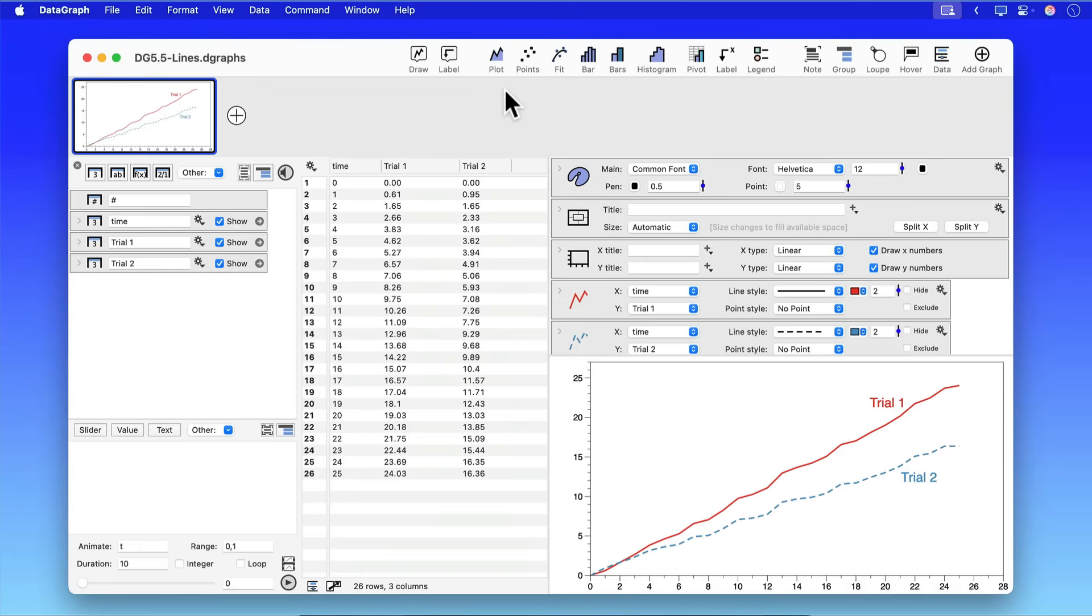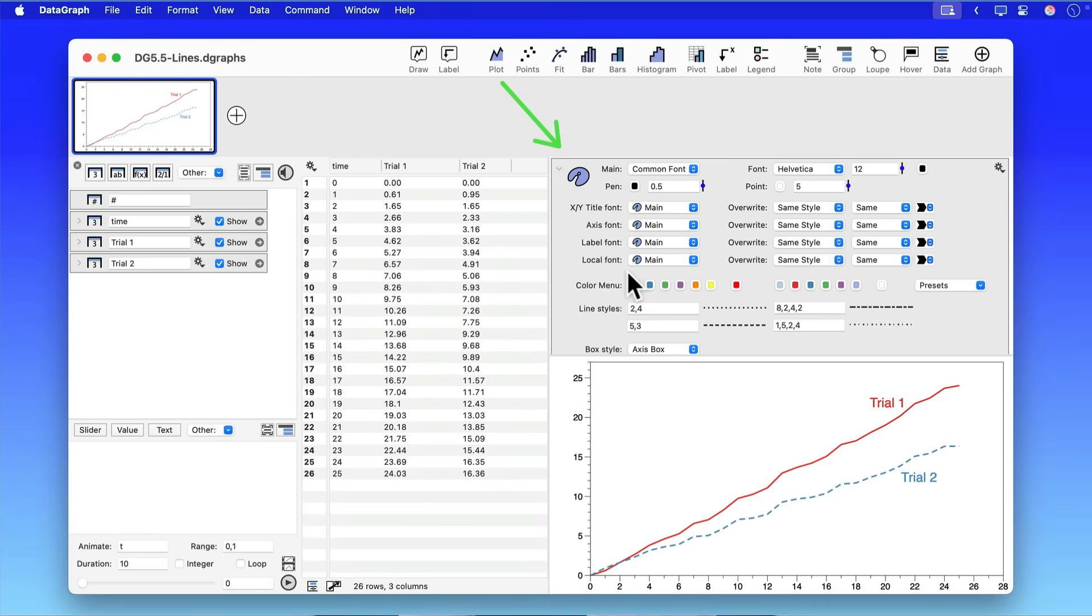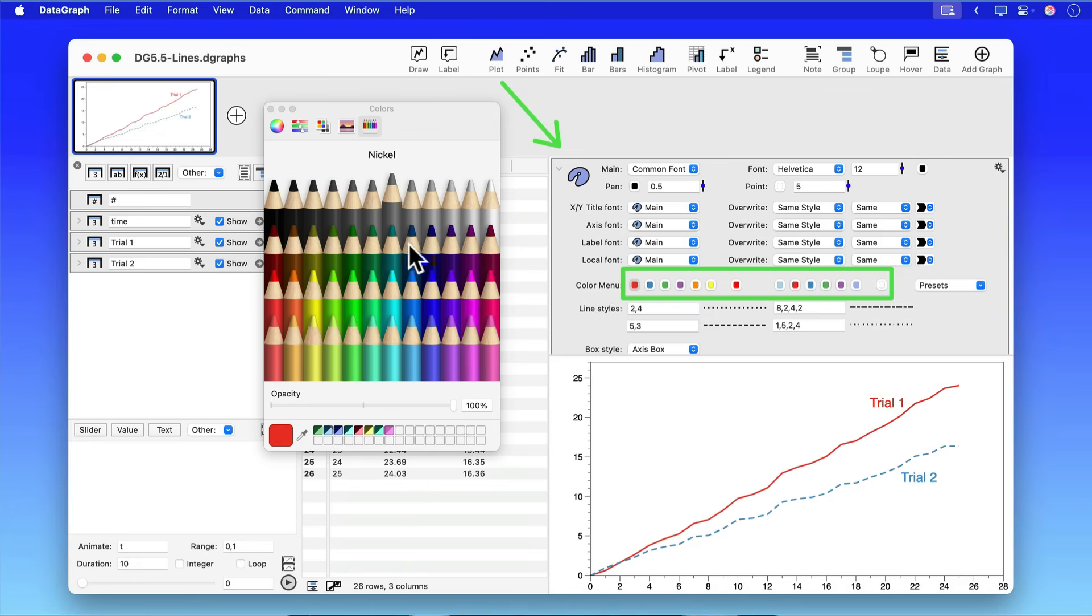Well, the best way to do this is actually not within the command itself but you want to go up to the style settings and within the style settings, if you open that up, you will see a series of tiles that are the same colors that are in that color menu. And if you change the color there, it changes them in the color menu and it also updates any elements in your graph that are using those colors.